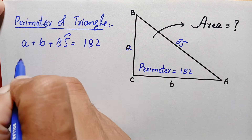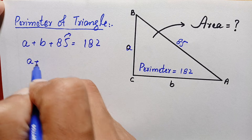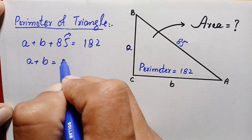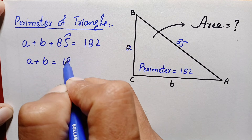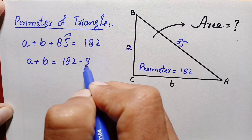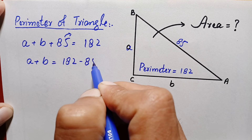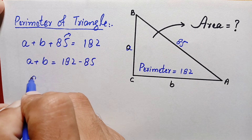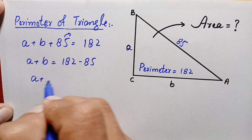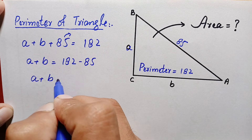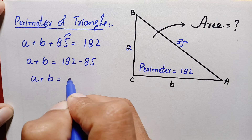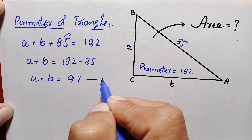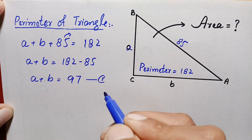Let's simplify this equation. We take 85 to the right-hand side, so this becomes a + b = 182 − 85. Subtracting these two numbers gives us a + b = 97. Let's call this equation number one.